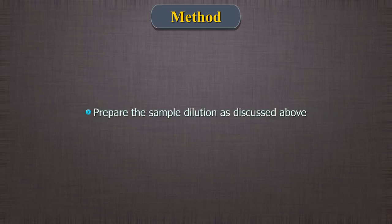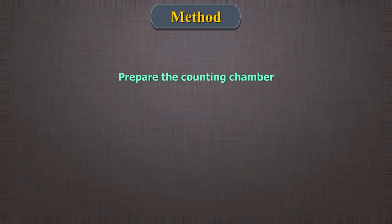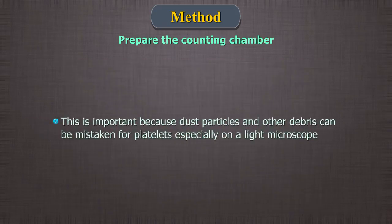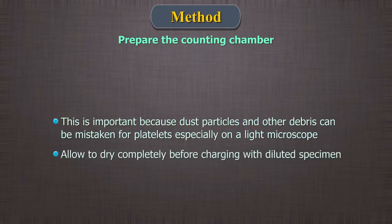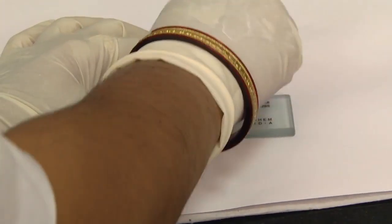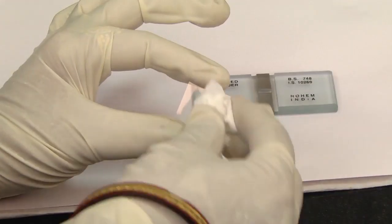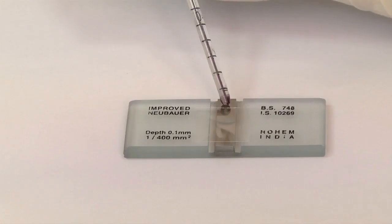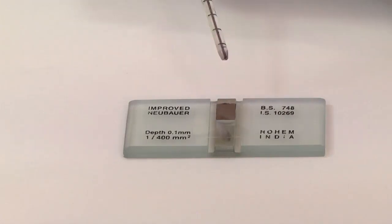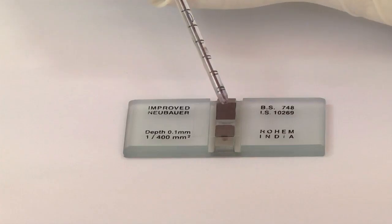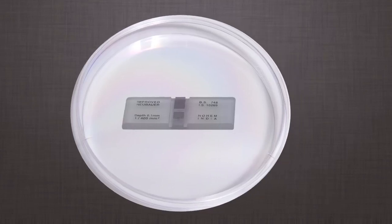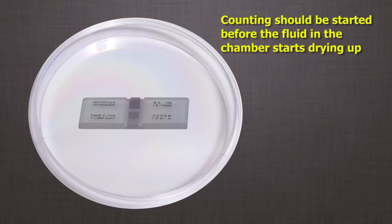Method: 1. Prepare the sample dilution as discussed above. 2. Prepare the counting chamber. Meticulously clean the hemocytometer with lint-free paper. This is important because dust particles and other debris can be mistaken for platelets, especially on a light microscope. Allow to dry completely before charging with diluted specimen. 3. Clean the mirror-like polished surface carefully with lens paper. The coverslip is also cleaned and placed over the counting surface prior to putting on the cell suspension. 4. Charge the counting chamber by allowing a small drop of fluid to form at the tip of the pipette and gently bringing it into contact with the edge of the coverslip. After charging the chamber, keep it in a moist Petri dish for 20–30 minutes to allow platelets to settle down. Counting should be started before the fluid in the chamber starts drying up. Moistened filter paper or cotton retains evaporation of diluted specimen while standing.